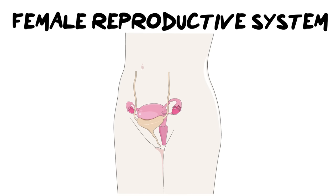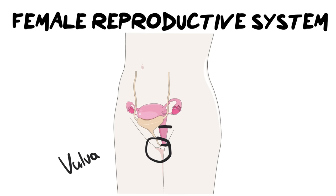I want to quickly break down some misconceptions about the female reproductive system. When we use the word vagina we are actually talking about this internal section over here, which is not visible from the outside. Generally when people use the word vagina they are talking about the outside part of the female reproductive system, but that's actually not what it is. The vagina is internal — it is a birthing canal. What you're often referring to when you say vagina is actually this outer region called the vulva. So let's not confuse the two.